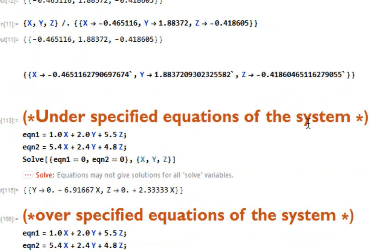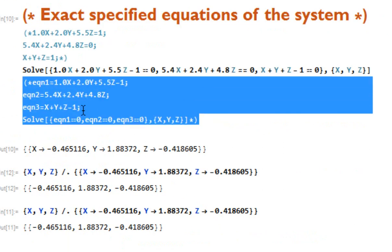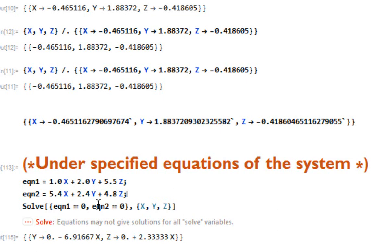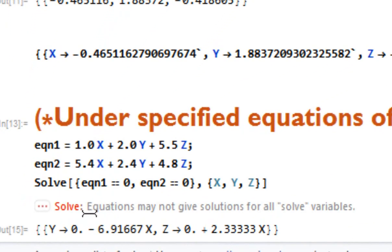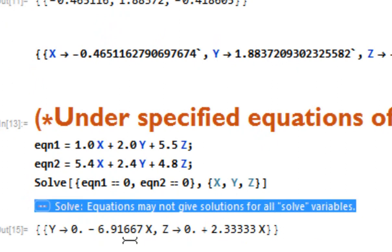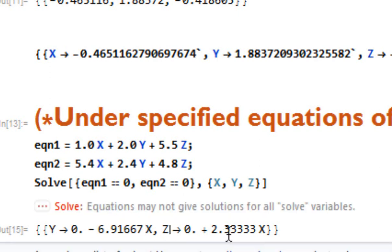Now let me explain under specified equations. I used only two equations with three variables. As soon as you run it with Shift and Enter, you will see a message: 'equations may not give solution for all solve variables.' You can see the value of y depends on x, and the value of z depends on x. That means you have to specify x to get exact values of y and z — this is the under specified equations of the system.